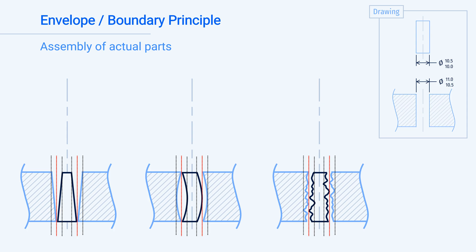If we colored the area between our actual part and the MMC boundary for the boss in orange and the hole in yellow, we can see that each part could vary to occupy this space without affecting the fit of the two parts.